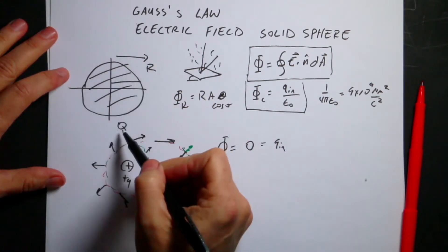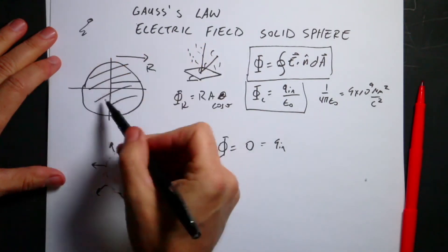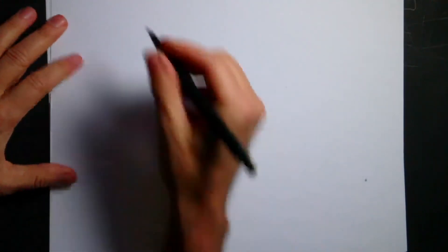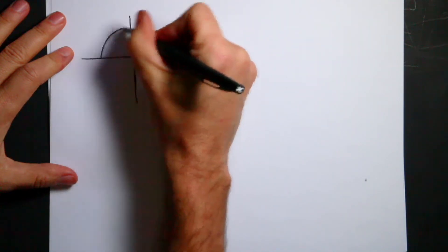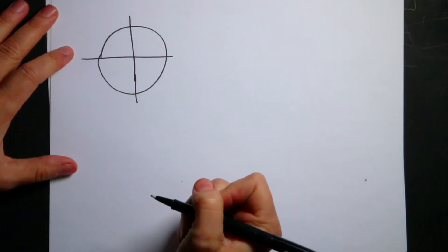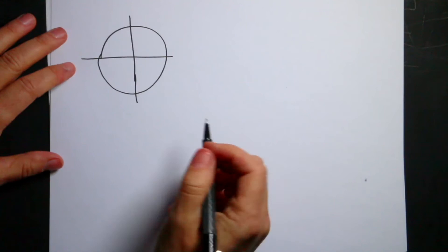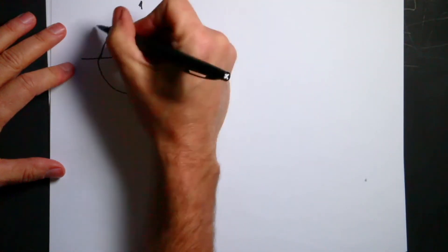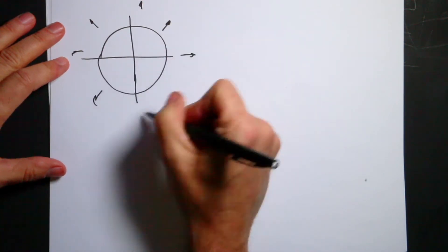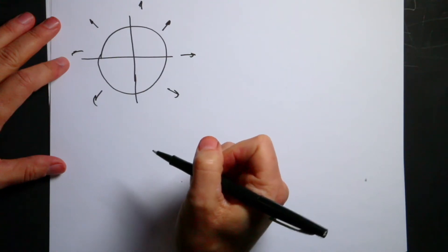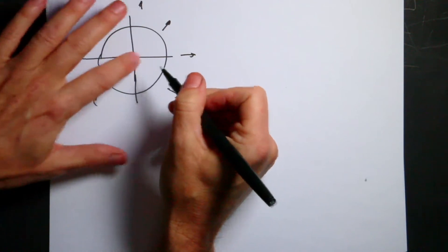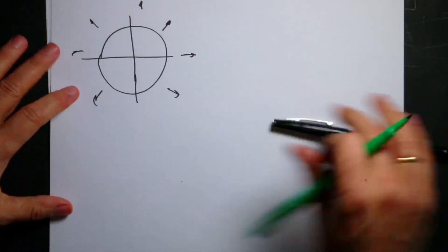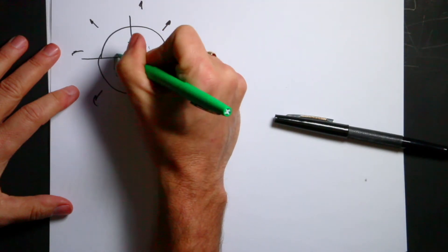Here I have a sphere of radius R and a total charge Q, and I want to find the electric field both outside and inside. The key to Gauss's Law is to make it as simple as possible so you don't even have to integrate. First, I need to make some assumptions about the shape of the electric field. Since this is a spherical sphere, I'm going to say the electric field is always pointing outward, and its magnitude is the same for every point at the same distance from the origin. So I've assumed two things about the electric field, and now I can use Gauss's Law.